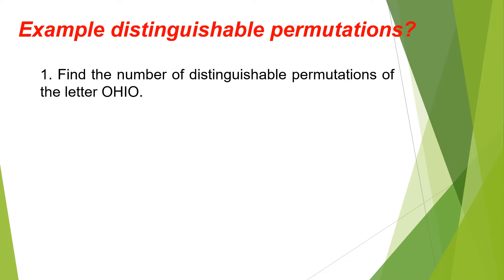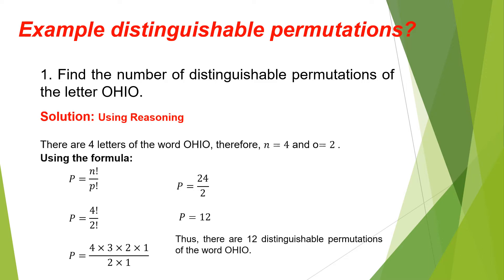Example of Distinguishable Permutations: Find the number of distinguishable permutations of the letters O-H-I-O. Solution: there are four letters in the word O-H-I-O.